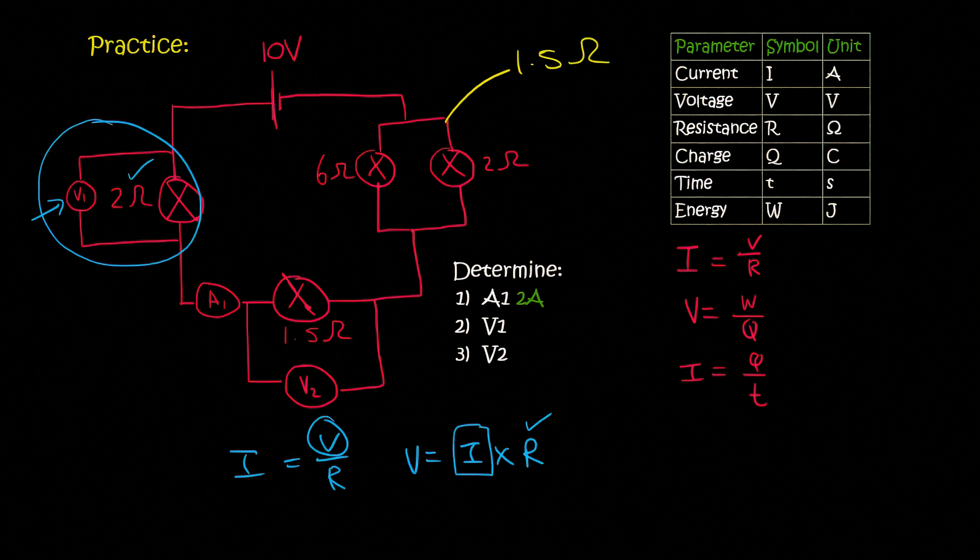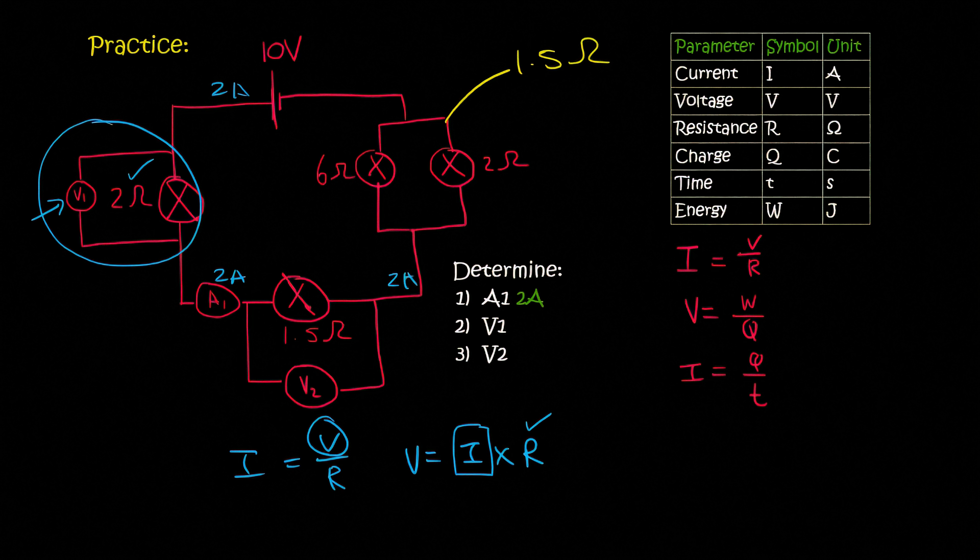Well, remember, we've just worked out I, which is the current, over here at A1 is 2 amps. But remember, at all parts in the circuit, the current flows at the same speed. Remember when the spy ran out in front of those five electrons and told them, guys, we're going to have a fridge, a TV, and an oven. And so we need to be able to run at a constant speed.